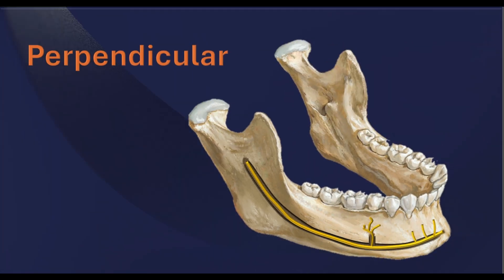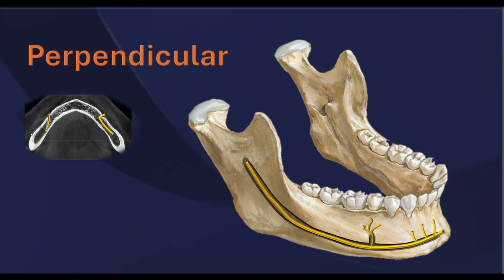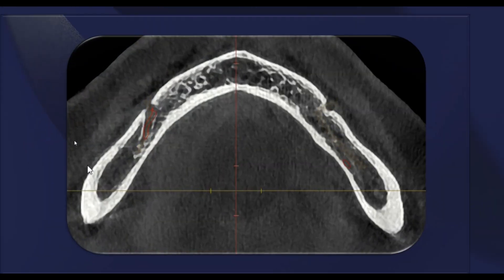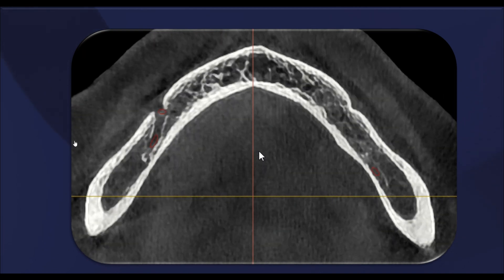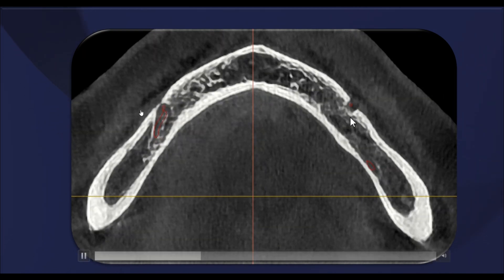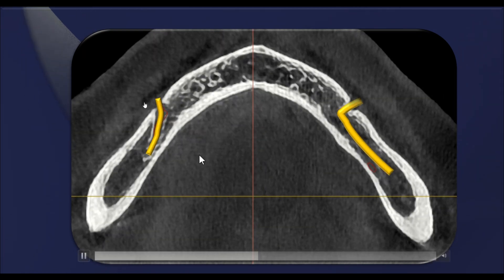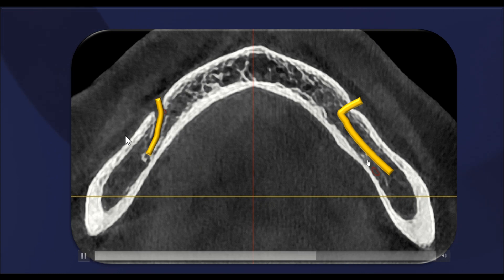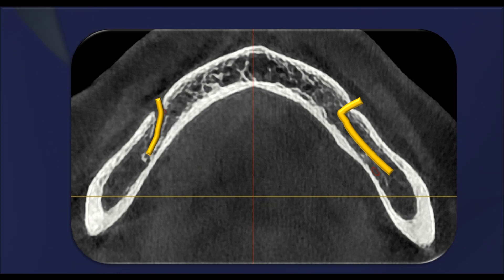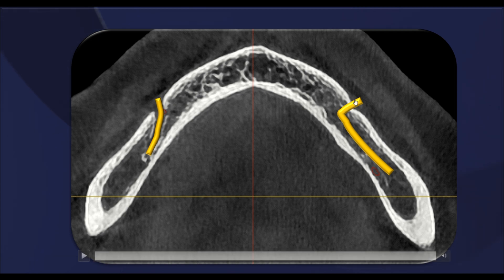In this CBCT axial section, notice how the mental nerve exits at almost a right angle before reaching the mental foramen — this is the perpendicular pattern. On the other side, you can see the straight pattern for comparison.